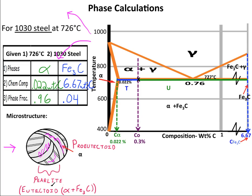Pearlite is not a phase. It is a microstructure consisting of alternating platelets of eutectoid alpha plus iron carbide. Notice that the phase fractions still reflect the amount of alpha and iron carbide in the drawn microstructure here, and that this phase fraction includes both the pro-eutectoid and the eutectoid alpha.